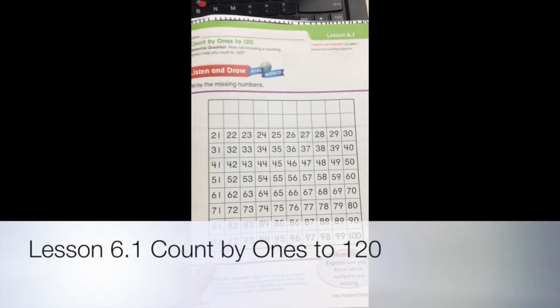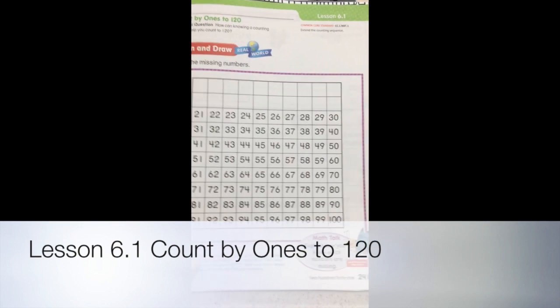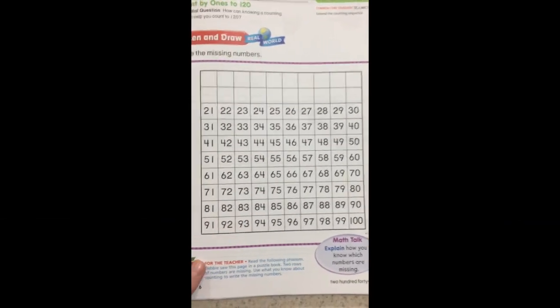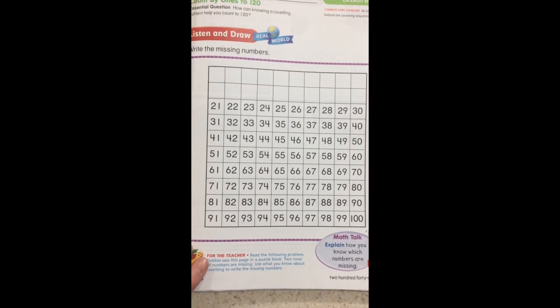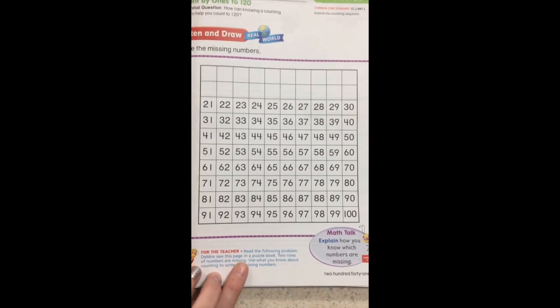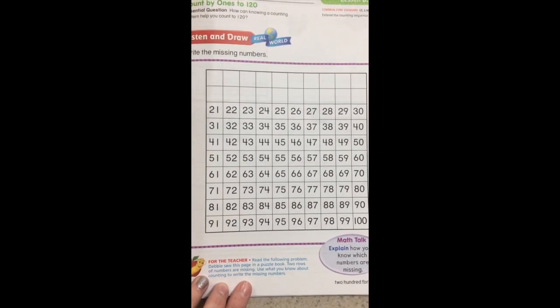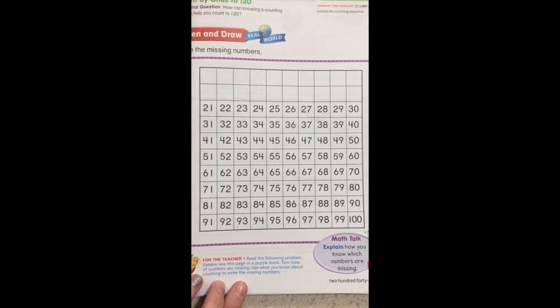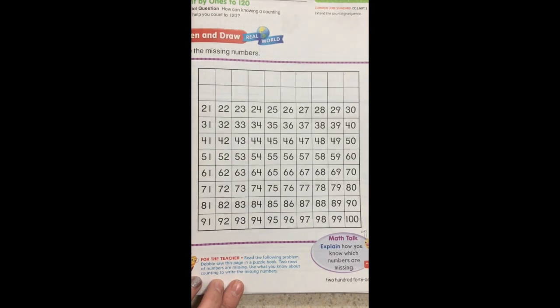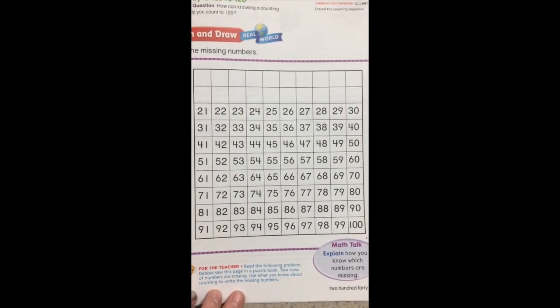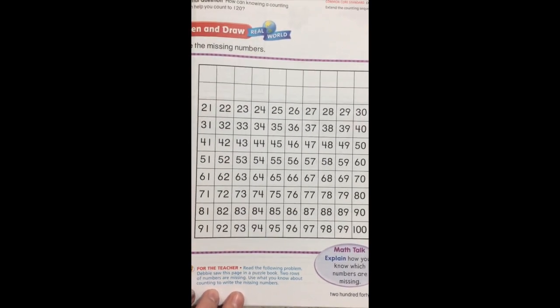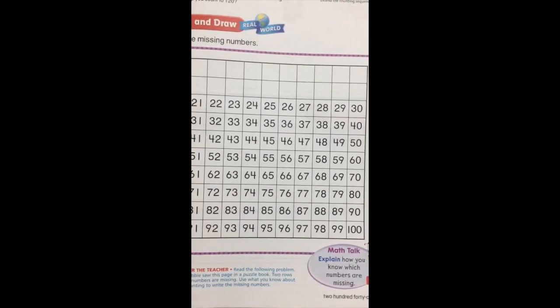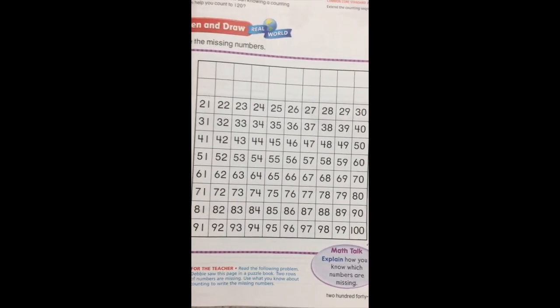Today we are on lesson 6.1, so make sure you have your book and you need to turn to page 241. It says Debbie saw this page in a puzzle book. Two rows of numbers are missing. Use what you know about counting to write the missing numbers.